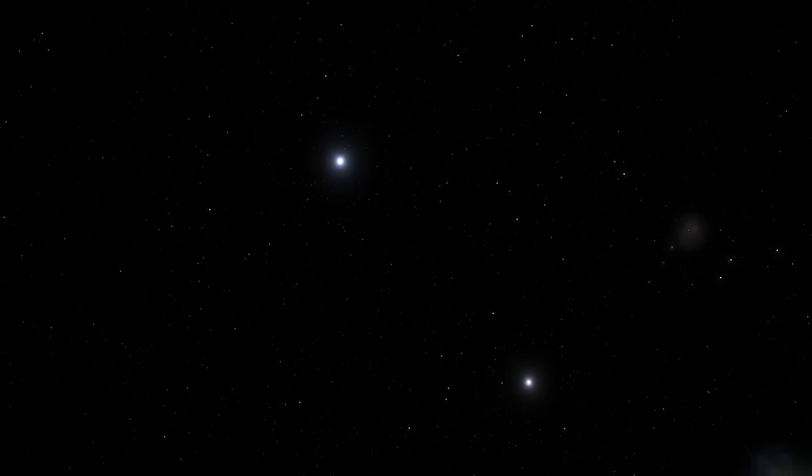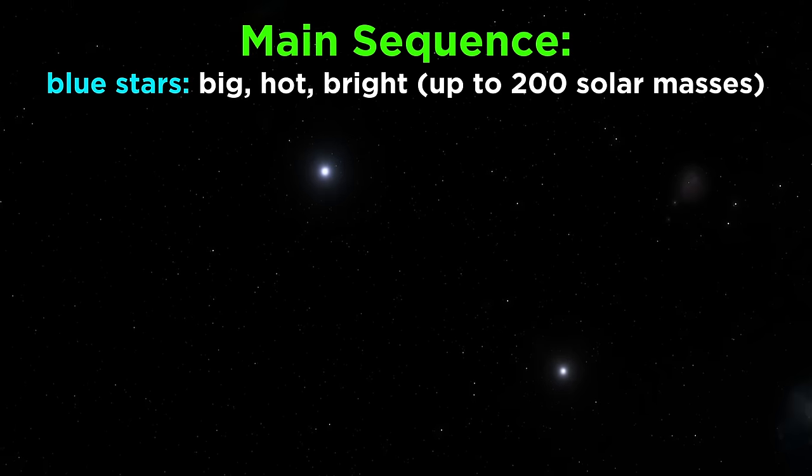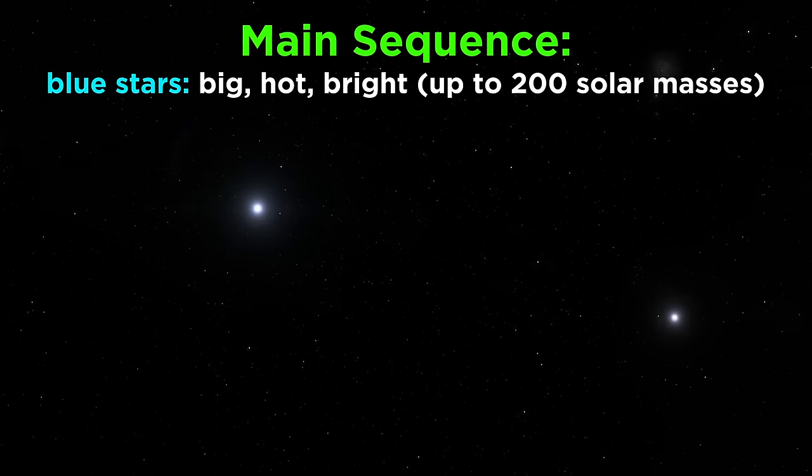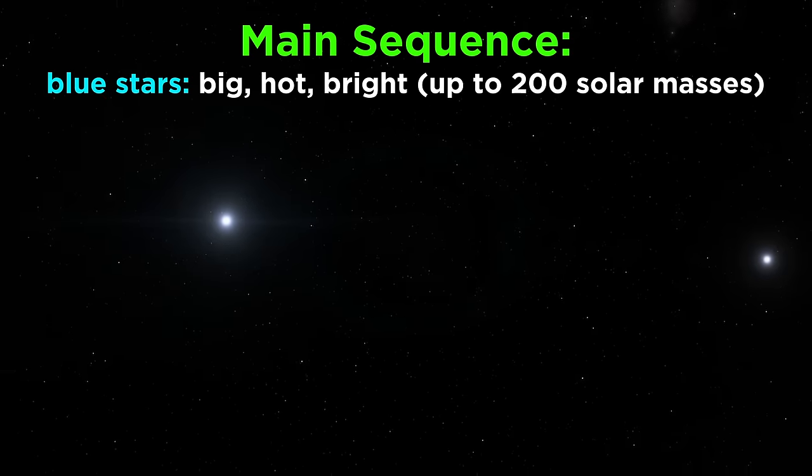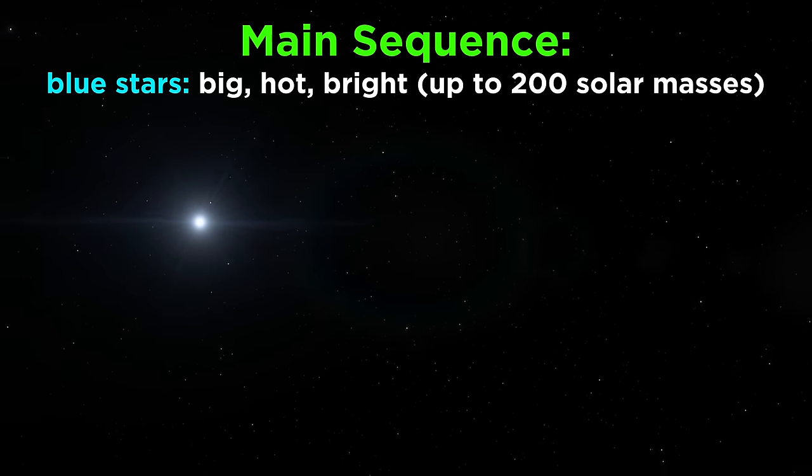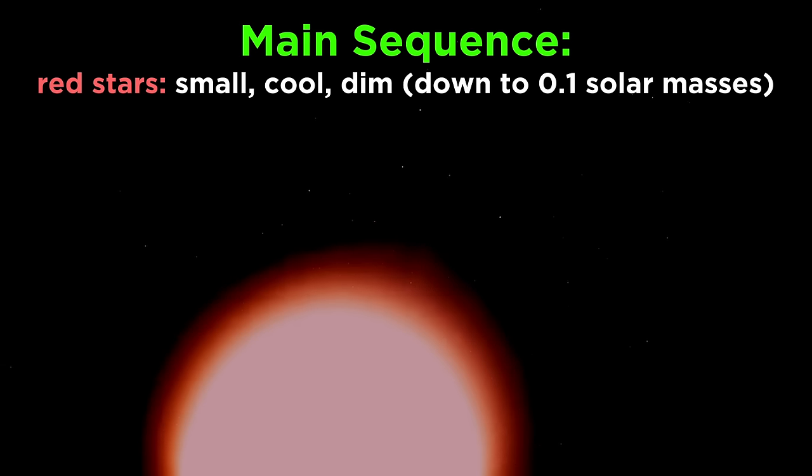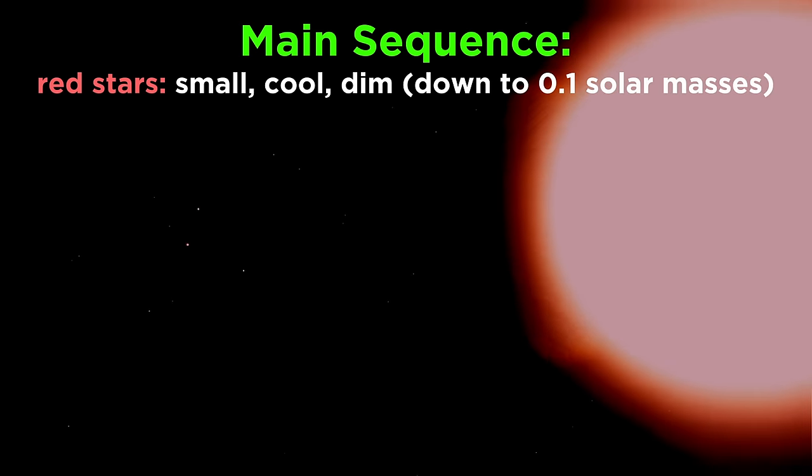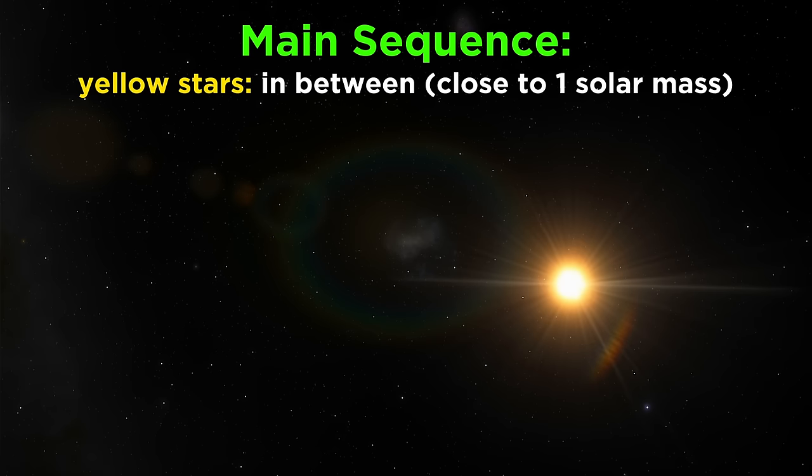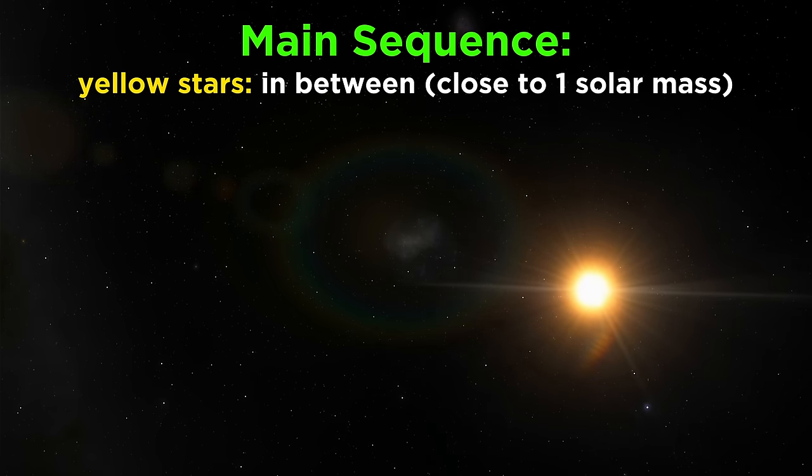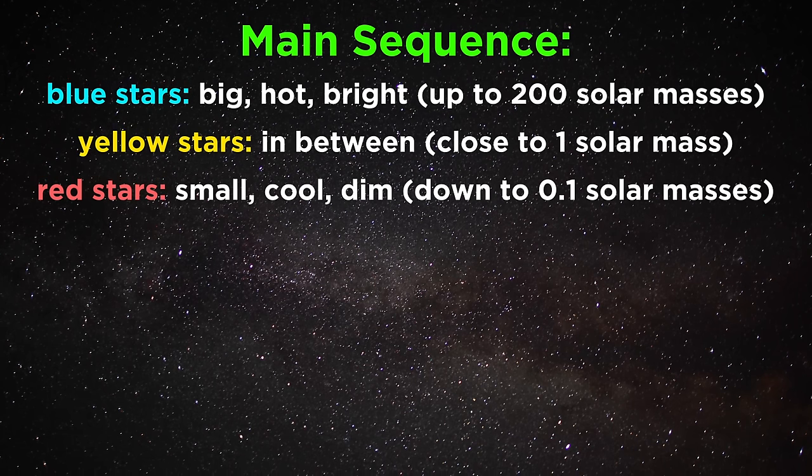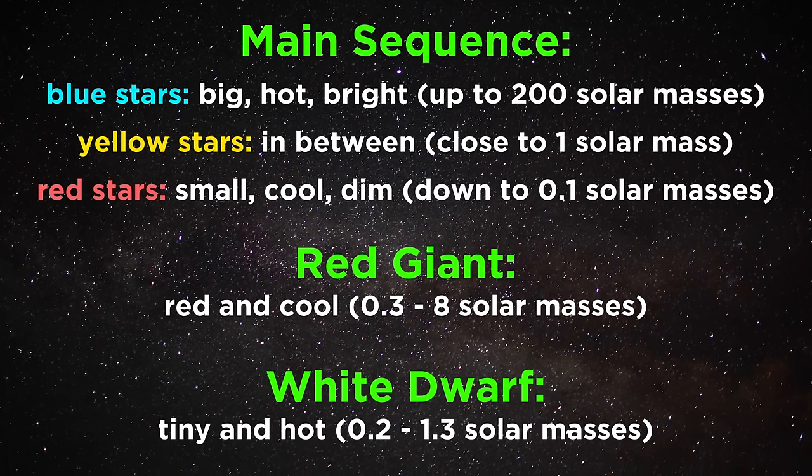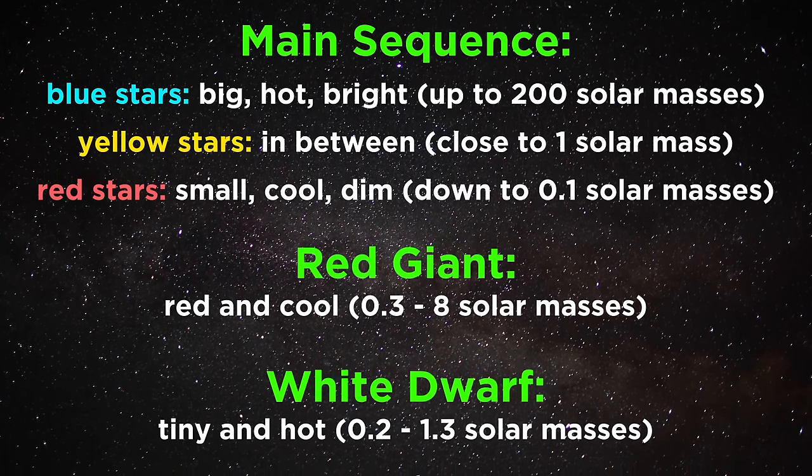So that's some basic information about all the stars in the universe. Remember for the main sequence, blue stars are big and hot and bright, up to about a hundred to two hundred solar masses, or one to two hundred times the mass of our sun. Red stars are small and cool and dim, down to around one tenth the mass of our sun. Yellow are in between, these are about the size of our sun. Then beyond main sequence stars, there are red giants, and there are white dwarfs. Those are the three main classes of stars.